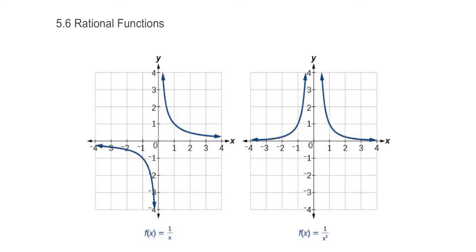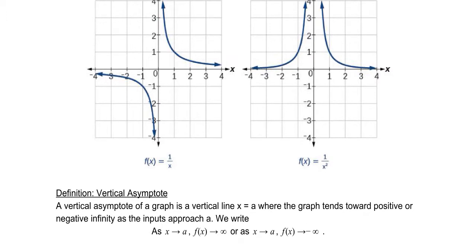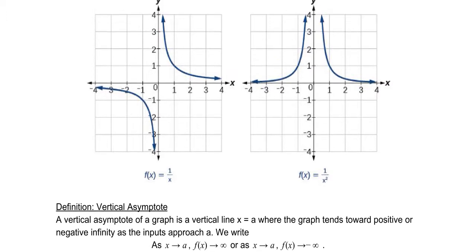There are a few characteristics that are distinct about rational functions we're going to discuss. The first is vertical asymptotes. A vertical asymptote is a vertical line on a graph that a function is undefined at — specifically, it is where the function goes to plus or minus infinity as you approach that point.